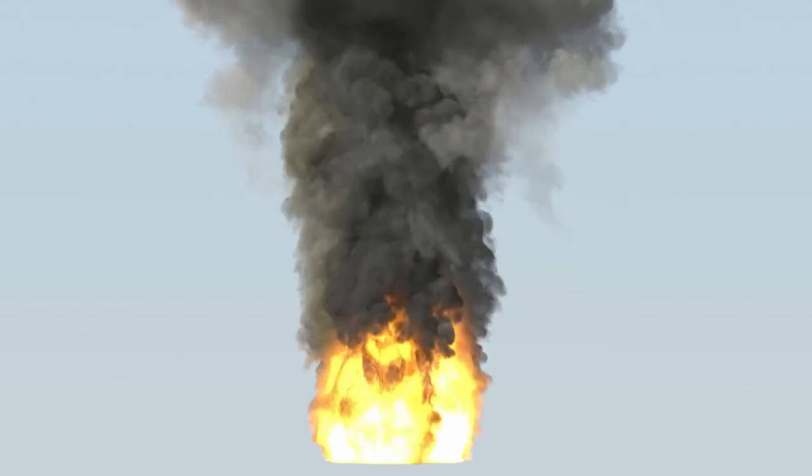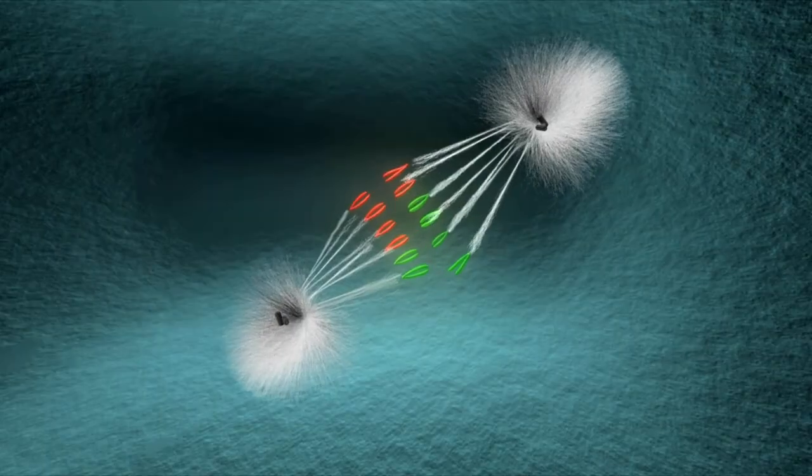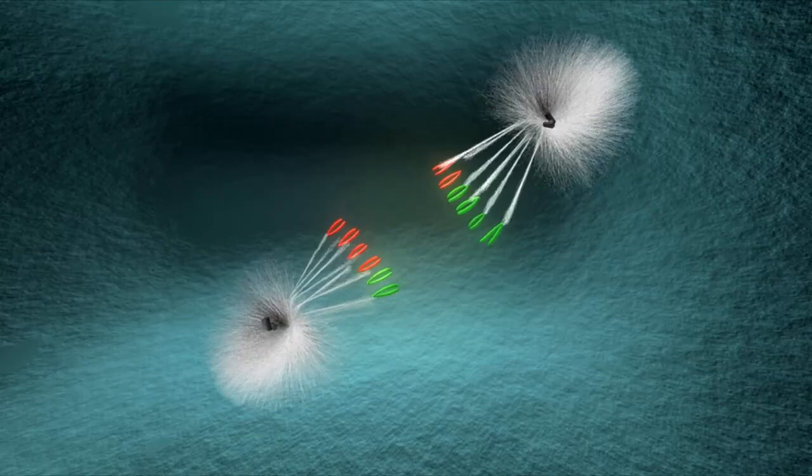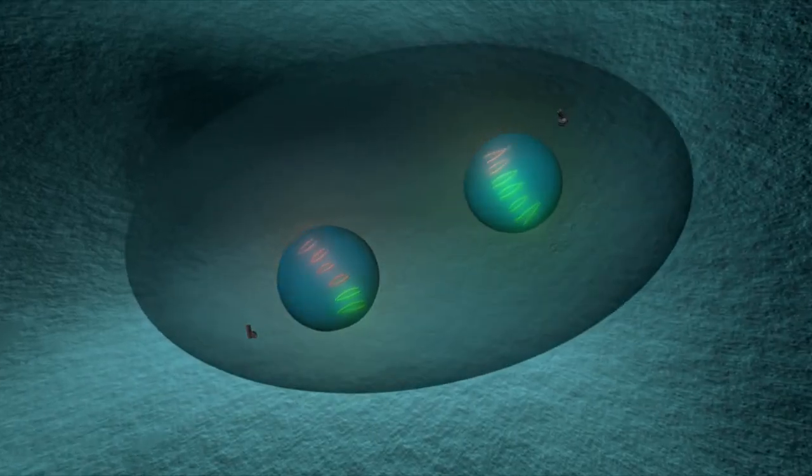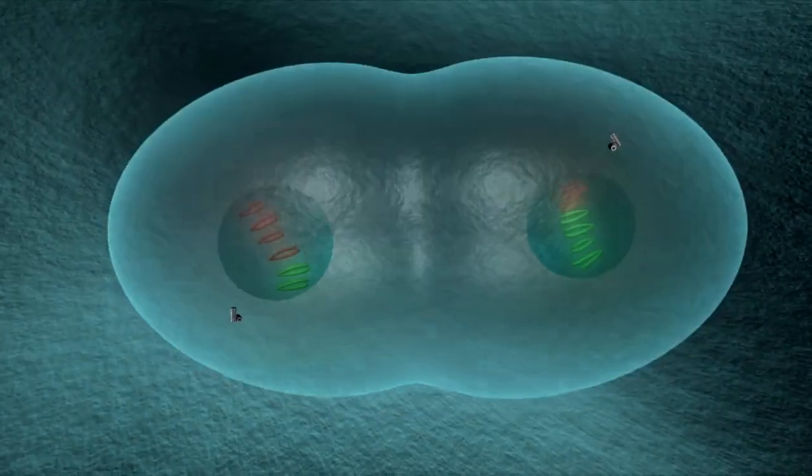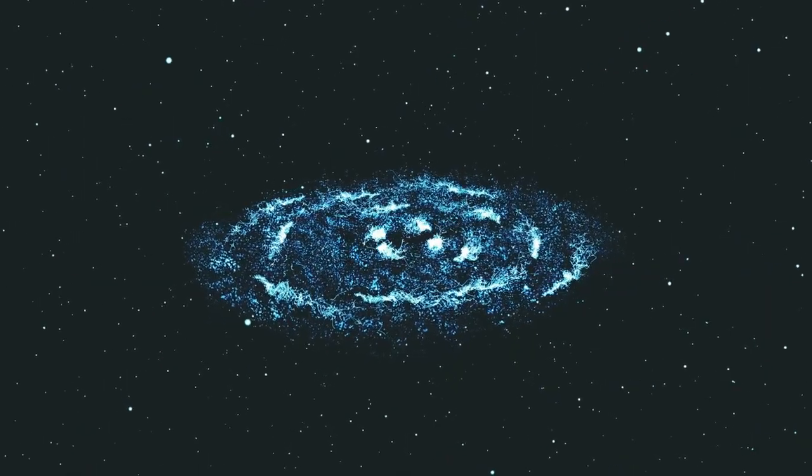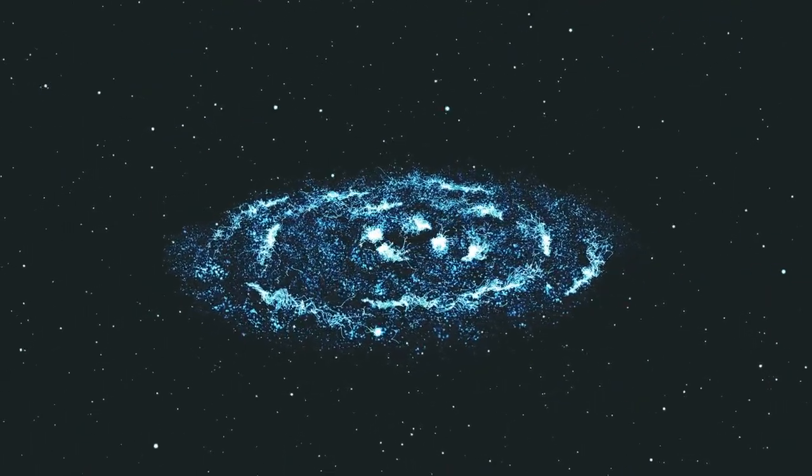During a deep field scan of what should have been an empty void, Webb detected rhythmic flashes of light—not pulsars, not quasars. These signals repeated with the precision of a machine. Then, without warning, they stopped.